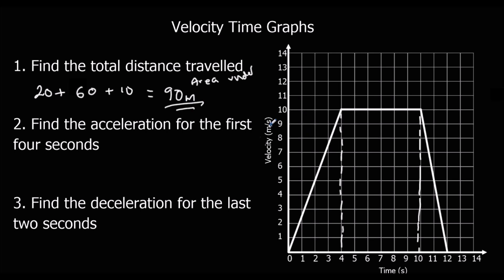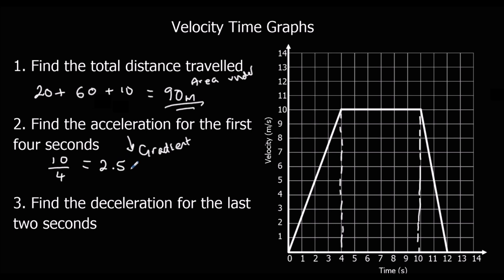I know it's metres because velocity is measured in metres per second. Next: find the acceleration for the first 4 seconds. Acceleration equals the gradient. The gradient is how much it goes up for every one across. It goes across 4 and up 10, so 10 divided by 4 is 2.5 metres per second squared.